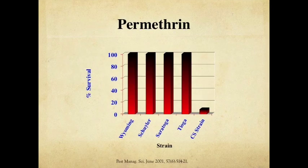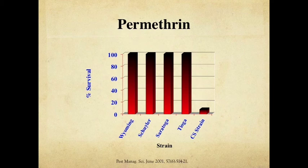The first insecticide looked at was permethrin, a very common pyrethroid insecticide. The graph shows the four different counties where insects were collected: Wyoming, Schuyler, Saratoga, and Tioga County, as well as the CS or Cornell susceptible strain. The left axis shows the percentage of insects that survived exposure to the material. For permethrin, we can see 100% survival in those four wild types collected across the state, while the CS strain shows very low survival.